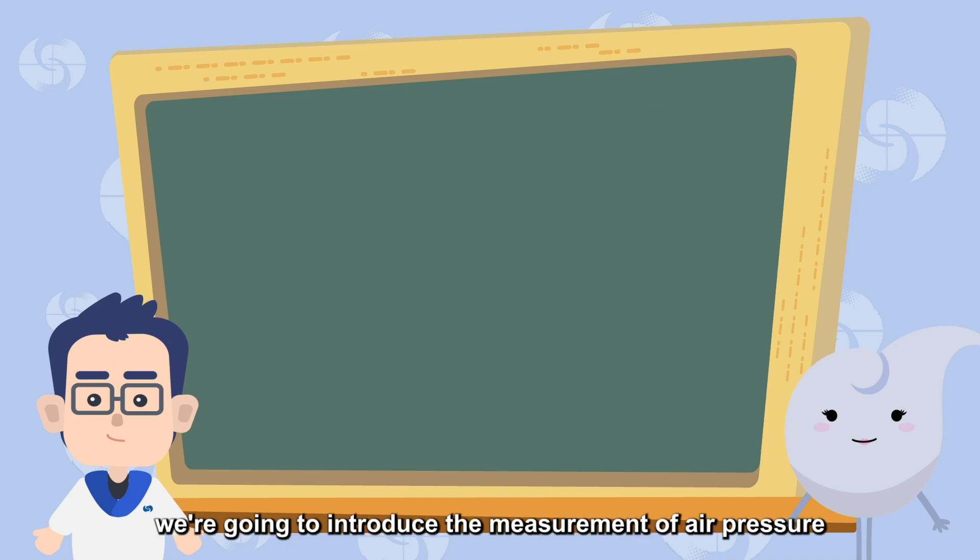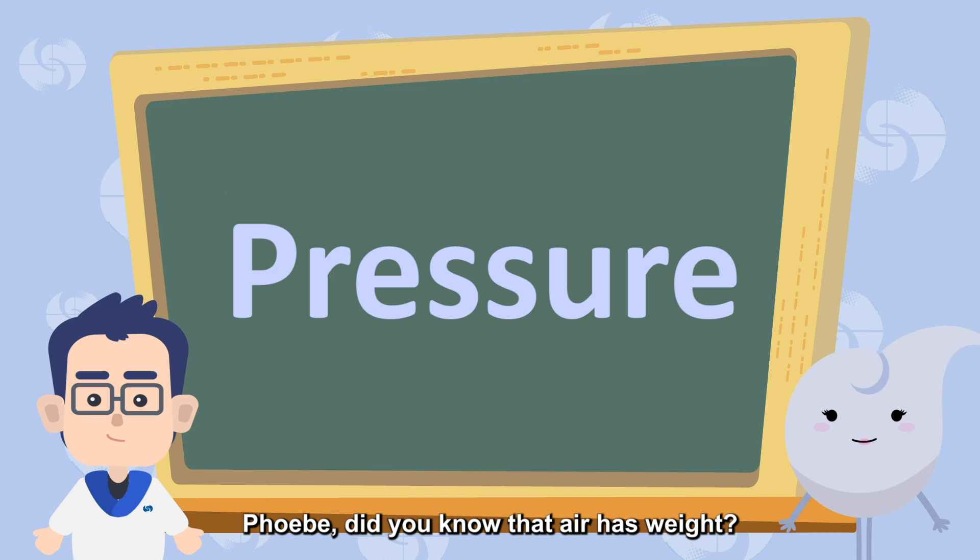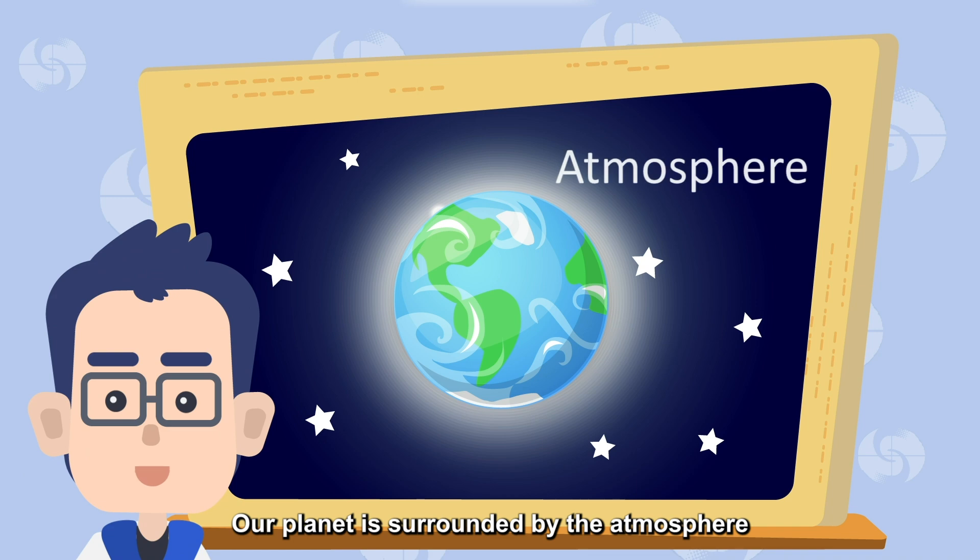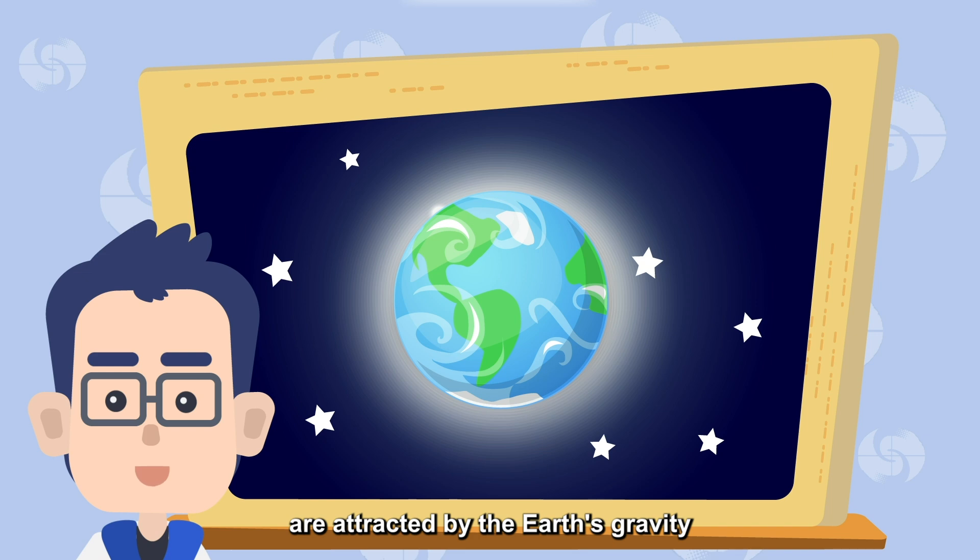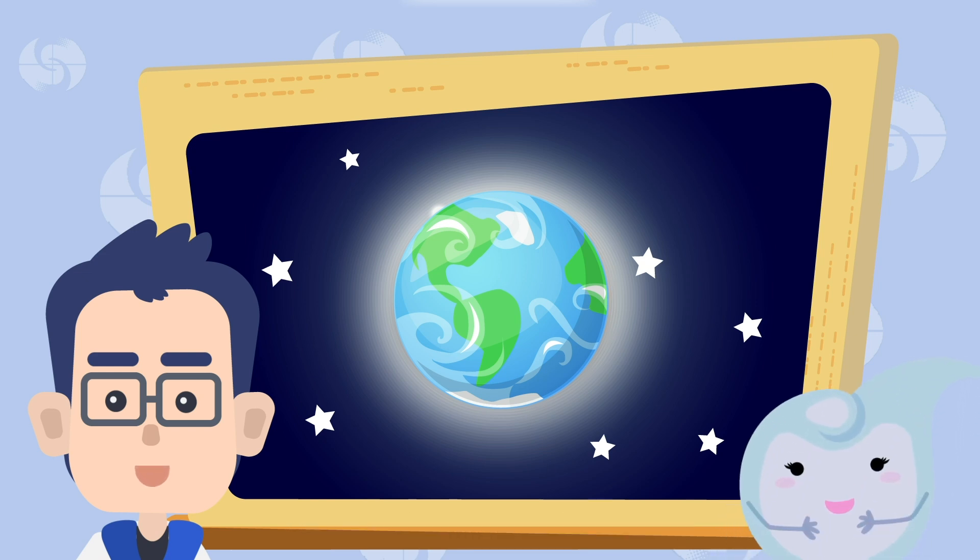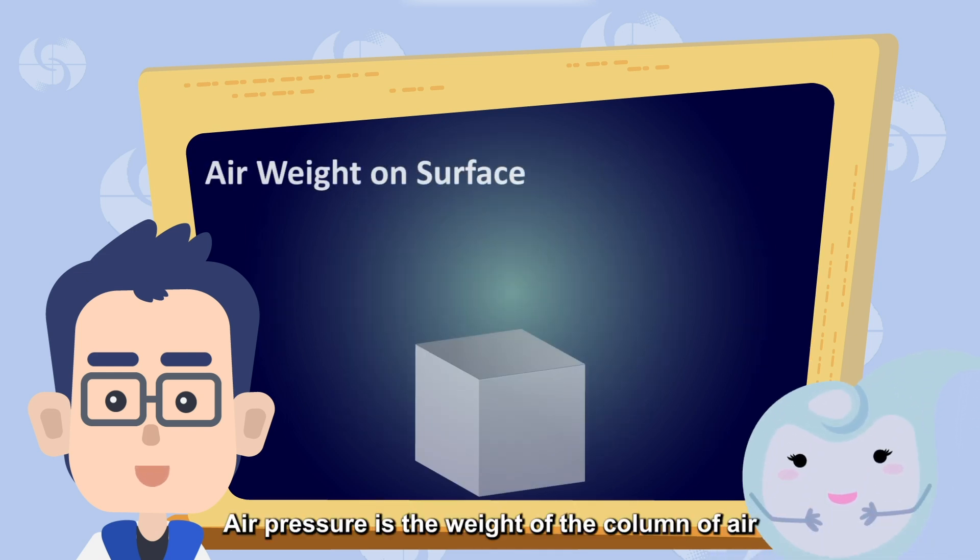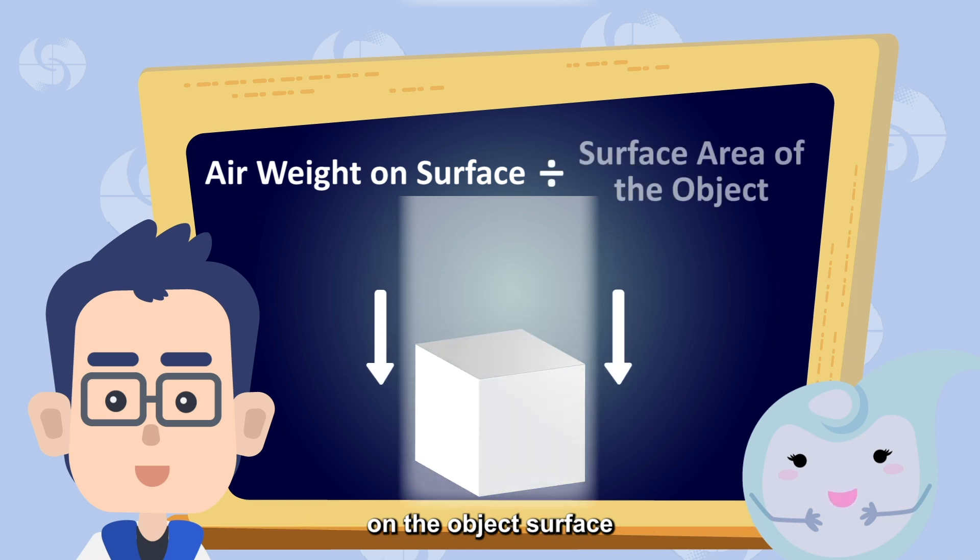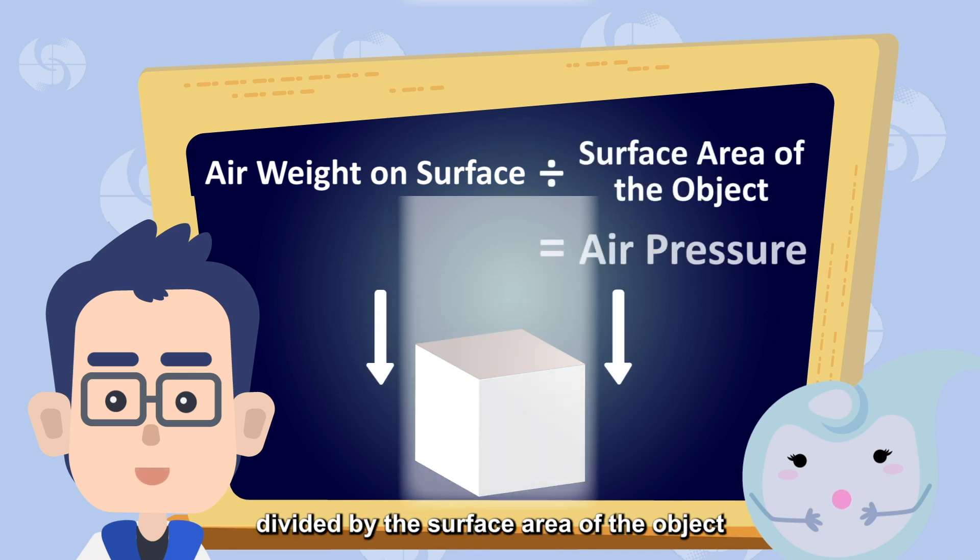Next, we're going to introduce the measurement of air pressure. Phoebe, did you know that air has weight? Of course! I'm also made out of air! Our planet is surrounded by the atmosphere, and the air particles in the atmosphere are attracted by the Earth's gravity. Air pressure is the weight of the column of air on the object's surface, divided by the surface area of the object.